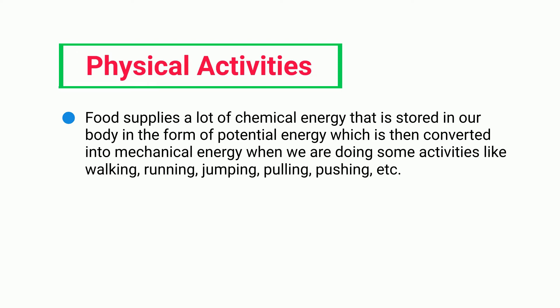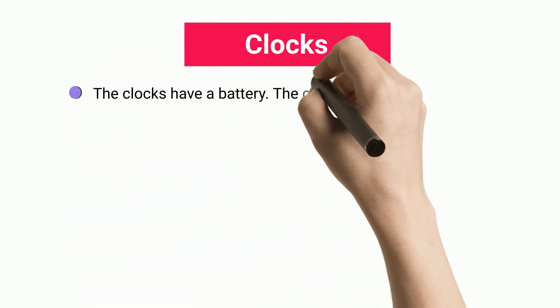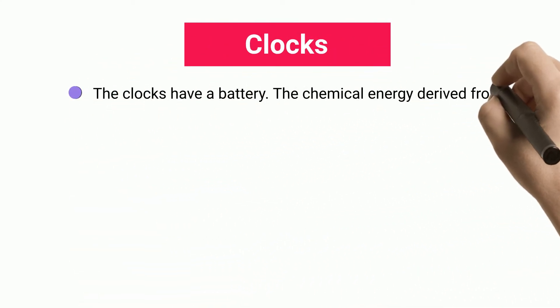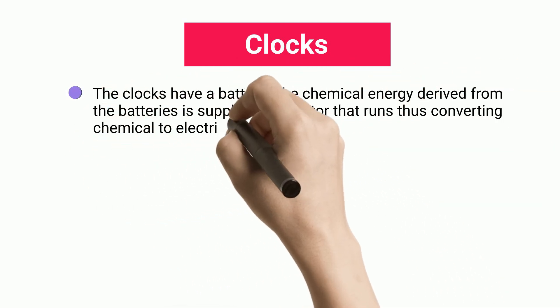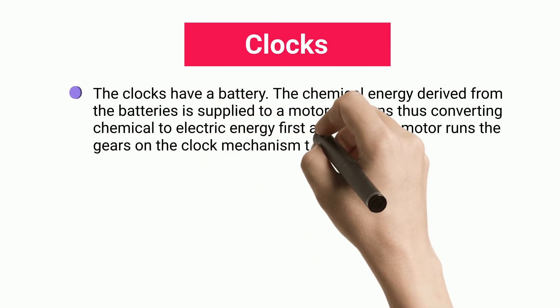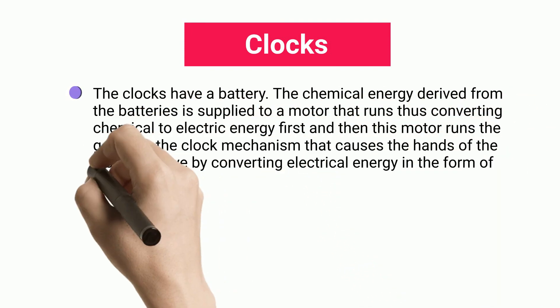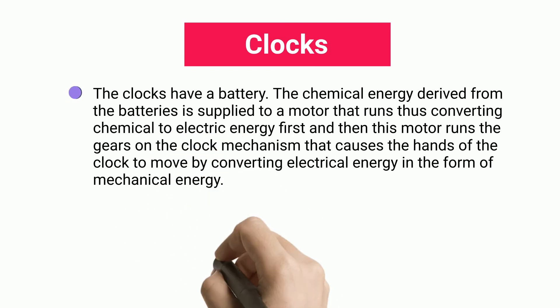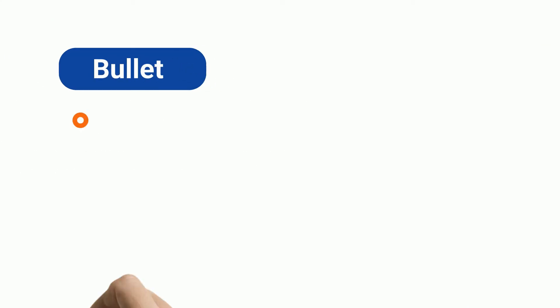Clocks: clocks have a battery, and the chemical energy derived from the battery is supplied to a motor, converting chemical energy to electric energy. This motor then runs the gears on the clock mechanism, causing the hands of the clock to move by converting electrical energy into mechanical energy.